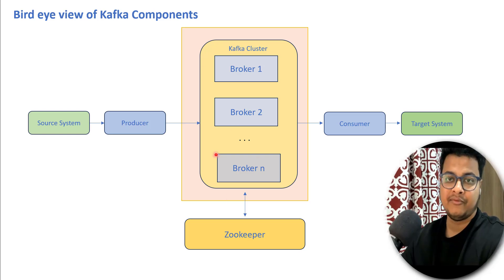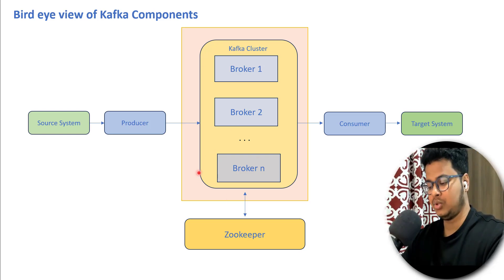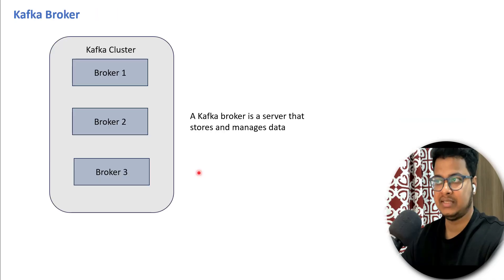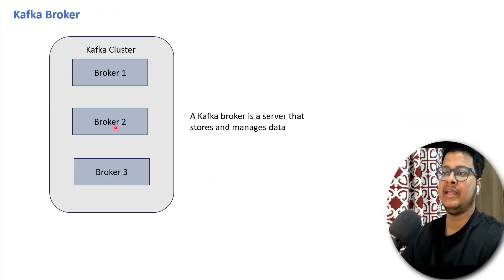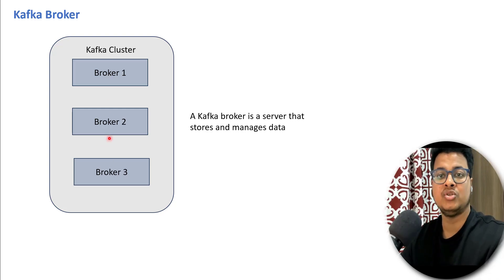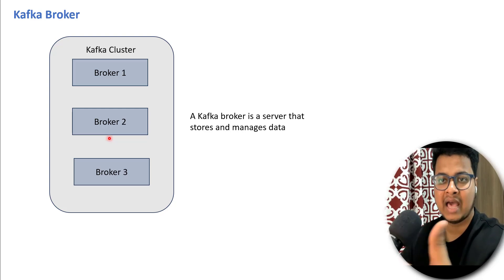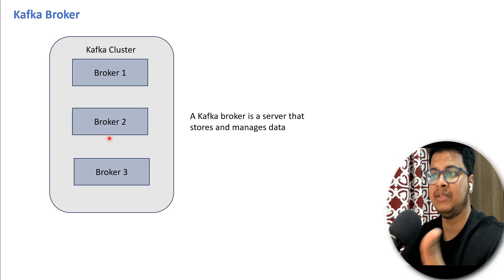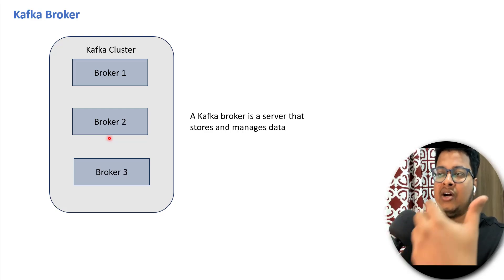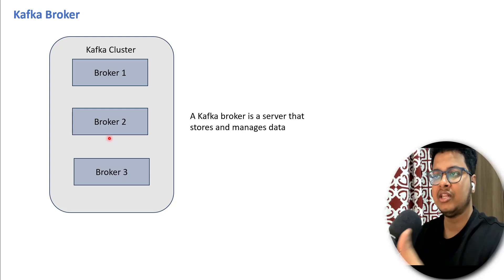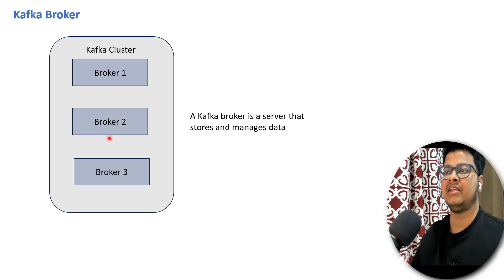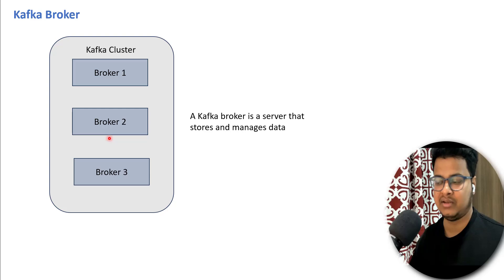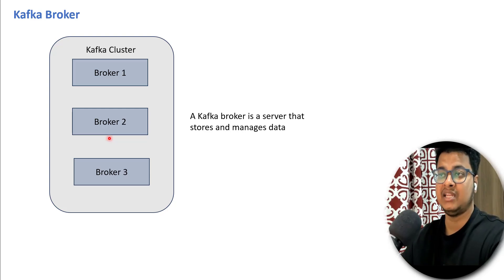Let's focus on the Kafka cluster and zoom in to understand what components exist. A Kafka cluster is like having different brokers — think of them as different virtual machines. If you use just one virtual machine, it won't have enough hardware for storing or processing data efficiently. By adding different machines together, you can do horizontal scaling for the cluster. That's how you scale any particular cluster.